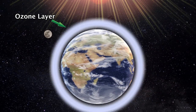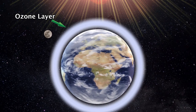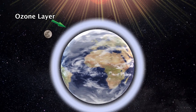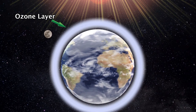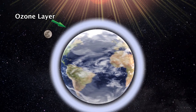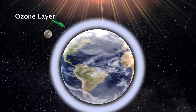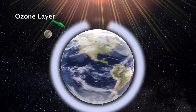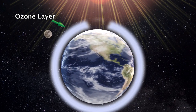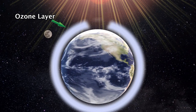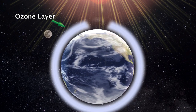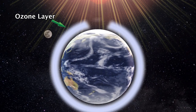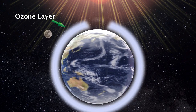The ozone layer is a protective shield surrounding the Earth, limiting the amount of harmful UV radiation from the sun. Studies showed that there was a significant hole forming in the ozone layer of the atmosphere, and that CFCs were a contributing factor to the creation and enlarging of this hole.